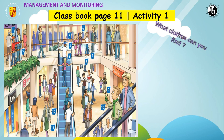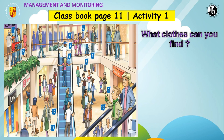Good job. Now everybody, let's go to our class books, page 11, activity one. We have to look at the picture and tell what clothes you can find. For example, number one — what is number one? Number one is a cap. What about number two? It's a shirt. Good job — it's a shirt.